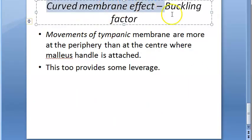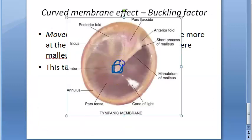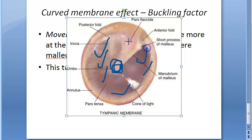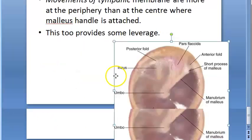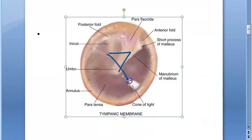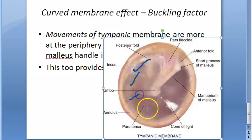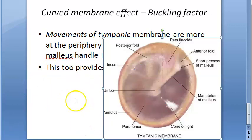The last point is the curved membrane effect, or buckling factor. The tympanic membrane has a central part called the umbo where the handle of the malleus is attached — this part doesn't move much. The movement is more at the periphery. Because of the conical shape of the tympanic membrane, as it moves in and out it buckles, so the malleus handle attachment moves less and the periphery moves more. This again increases the force and pressure.